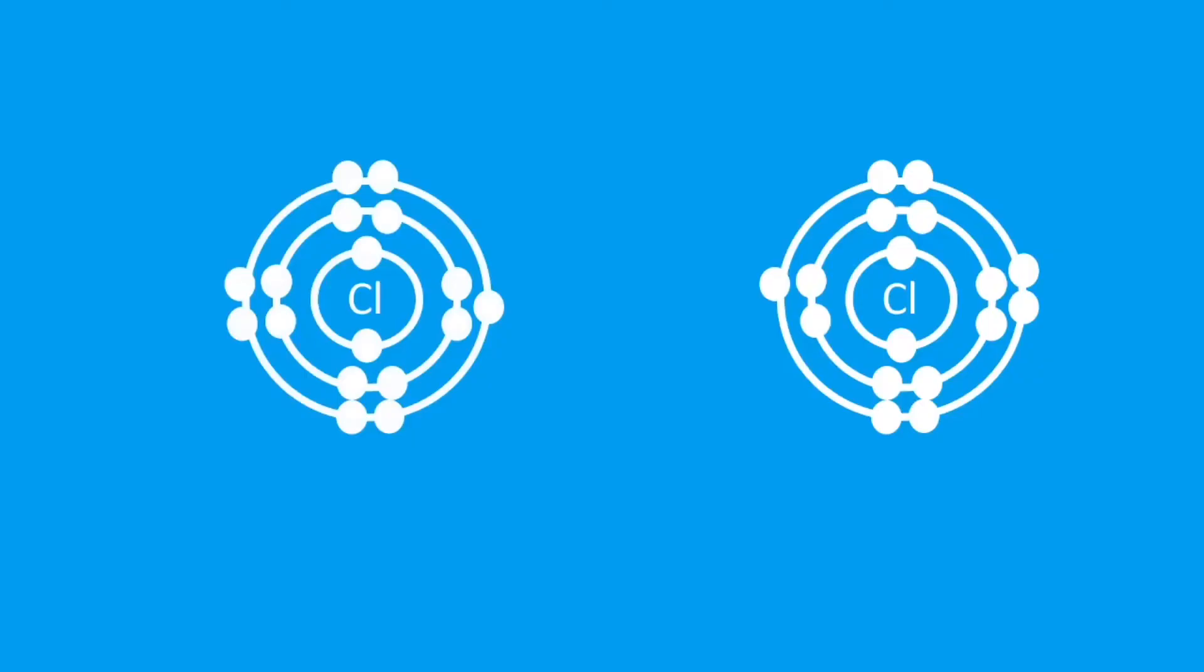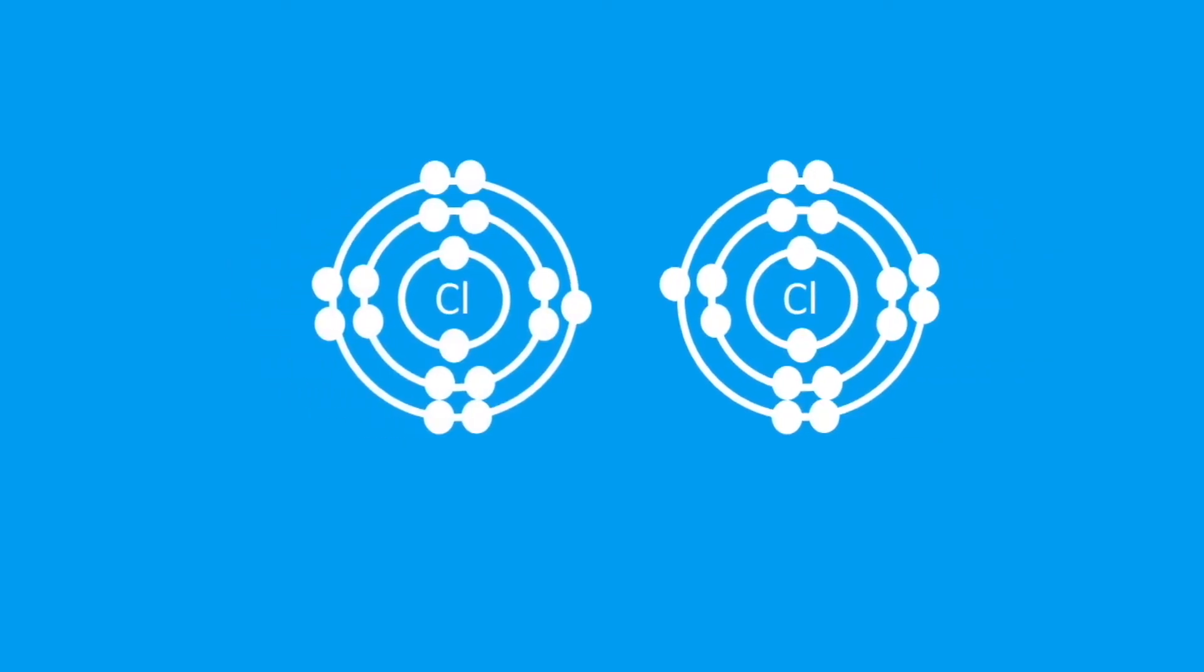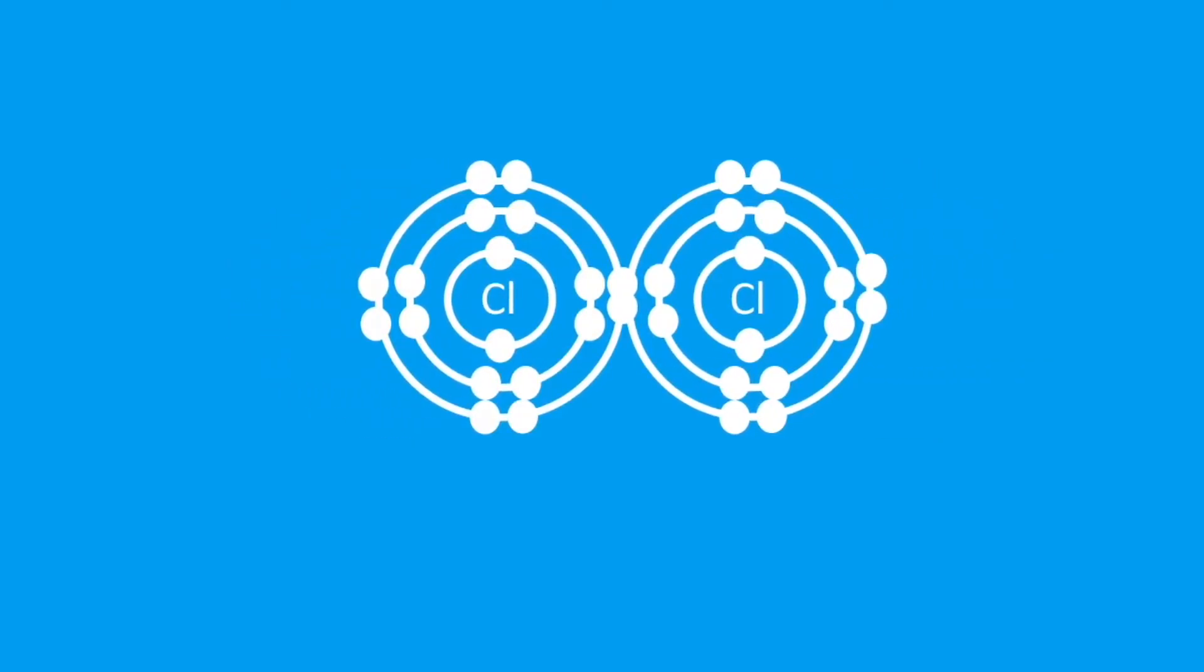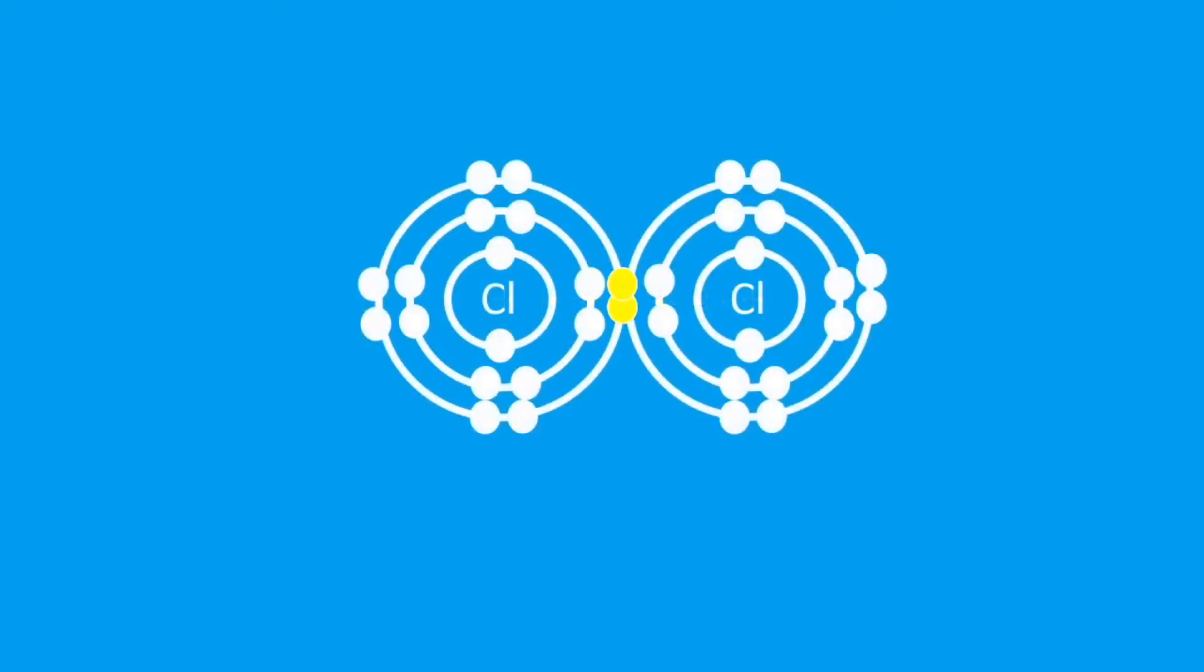So that's where another chlorine comes along, and chlorine exists as Cl2. There's that sharing of that pair of electrons, and there's that shared pair and the attraction between the two nuclei. And that's what's holding these two atoms together—is that attraction between the shared pair of electrons and the two nuclei.